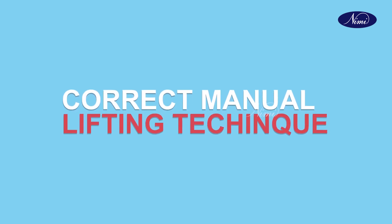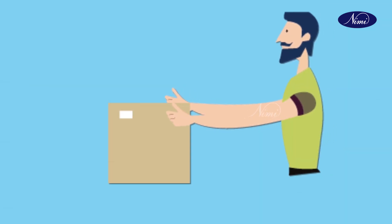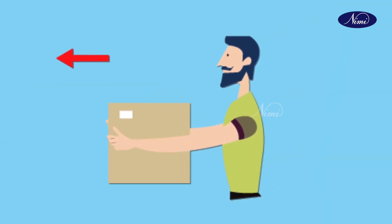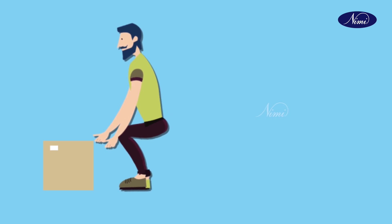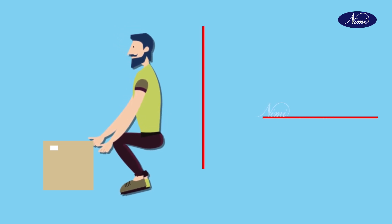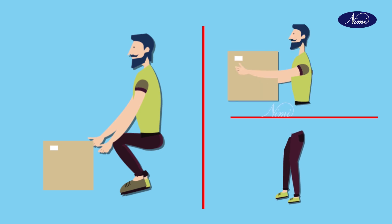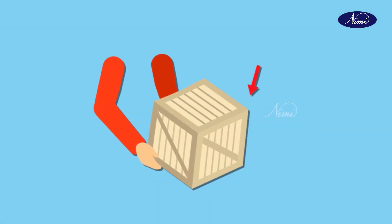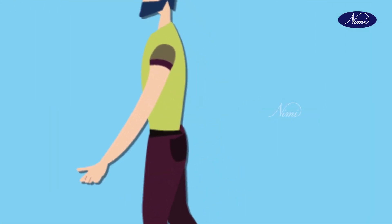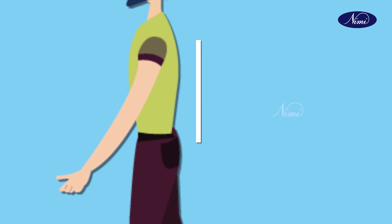Let us see in details of correct manual lifting techniques. Approach the load squarely facing the direction of the travel. The lift should start with the lifter in a balanced squatting position with the legs slightly apart and the load to be lifted held close to the body. Ensure that a safe firm hand grip is obtained. Before the weight is taken, the back should be straightened and held as near the vertical position as possible.